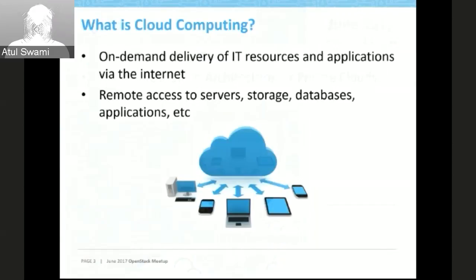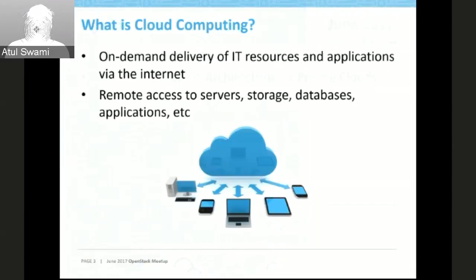Then there is resource pooling. Previously, if you had two compute nodes — one at 50% utilization and another at 150% — the 50% capacity of one compute node was wasted. With the advent of the cloud, you can make sure you are utilizing both resources completely.